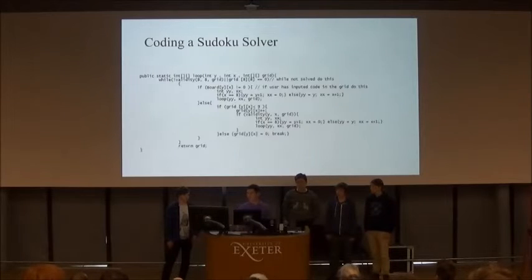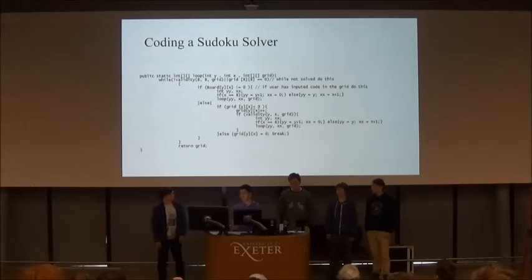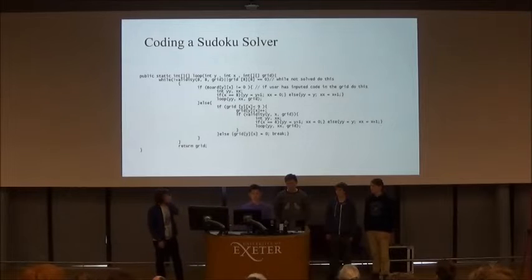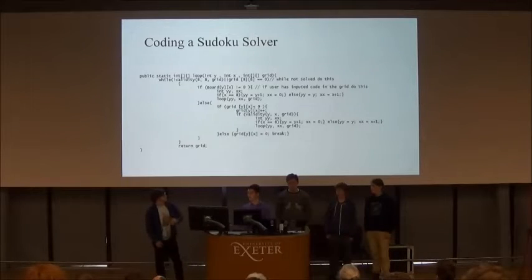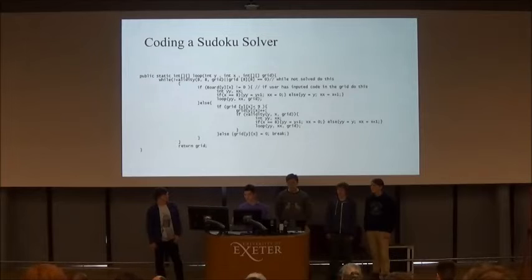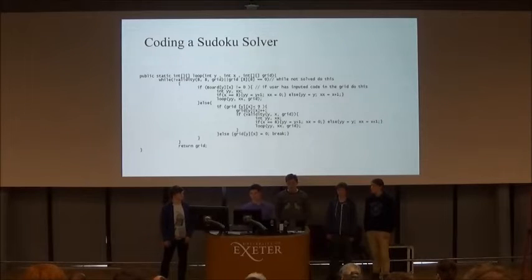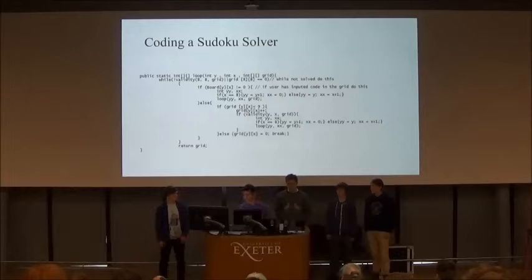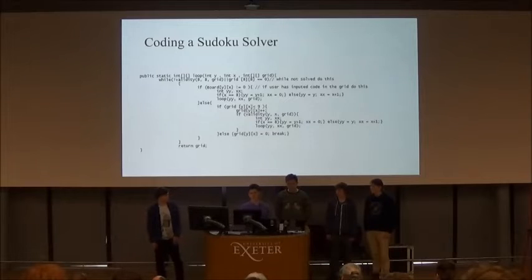We also decided to code a Sudoku solver. This solver works through a process of elimination — going through it systematically, checking every single square based on the inputs you've placed, seeing what number can go there, and running through multiple times until it creates a complete Sudoku.